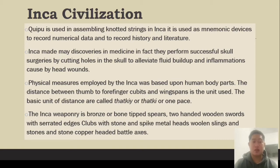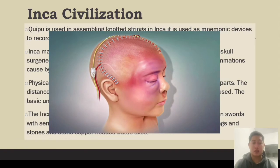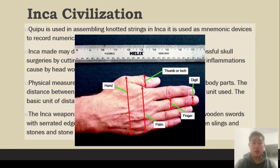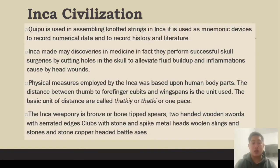The quipu was used in the Inca Empire for assembling knotted strings. It served as a mnemonic device to record numerical data and to record history and literature. The Inca made many discoveries in medicine; in fact, they performed successful skull surgeries by cutting holes in the skull to alleviate fluid buildup and inflammation caused by head wounds. Physical measures employed by the Inca were based upon human body parts — the distance from thumb to four fingers, cubits, and wingspan as units. The basic unit of distance was called the thatki.